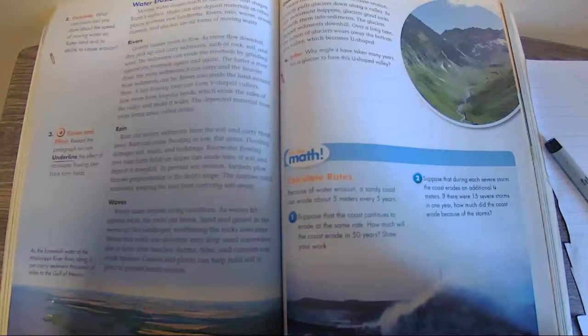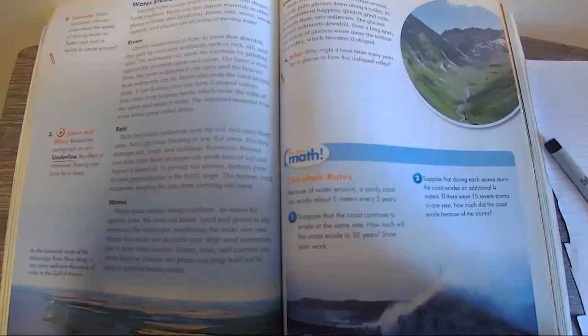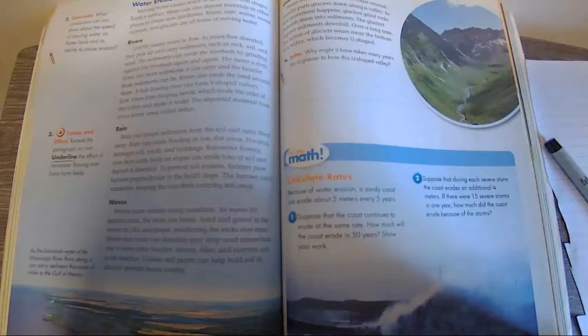Rivers. Gravity causes rivers to flow. As rivers flow downhill, they pick up and carry sediments such as rock, soil, and sand. The sediments can erode the riverbeds by grinding against the riverbeds again and again. The faster a river flows, the more sediments it can carry and the heavier sediments those can be.